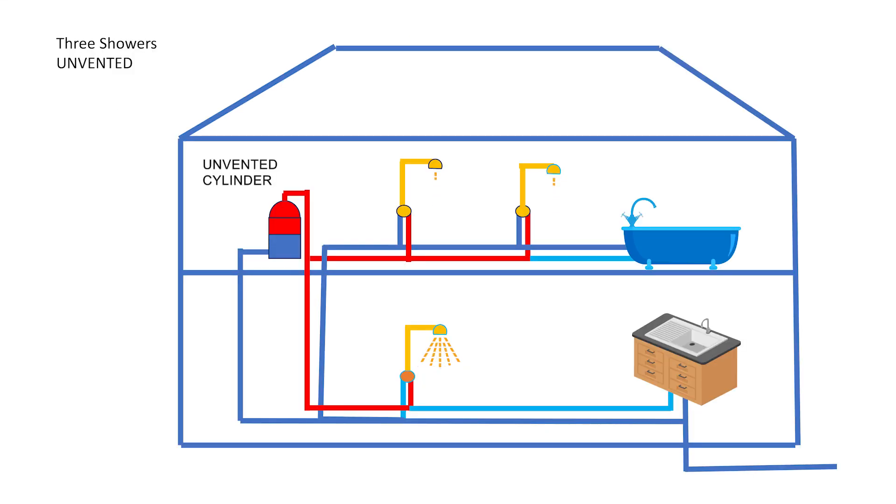The biggest problem with fully pressurised systems is that water will always take the easiest route and a downstairs shower or a tap can starve an upstairs shower. A single SP21S near the hot water cylinder will not solve that particular problem.